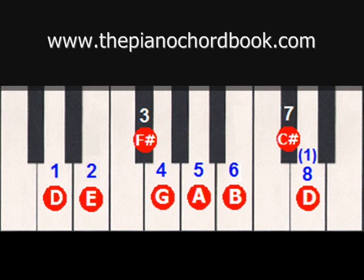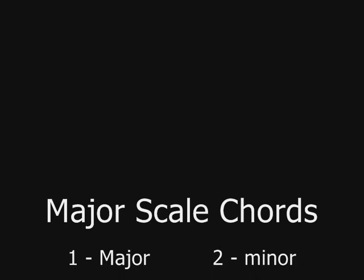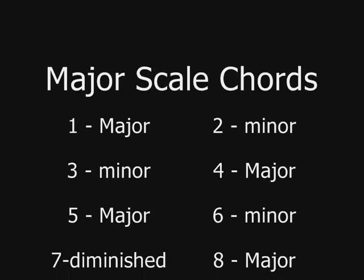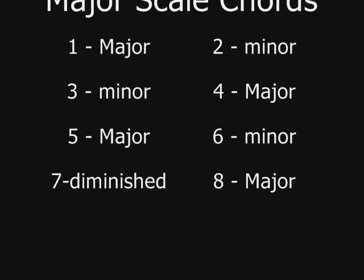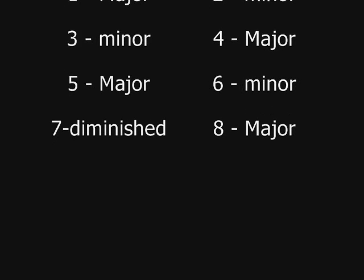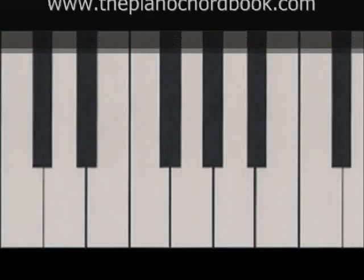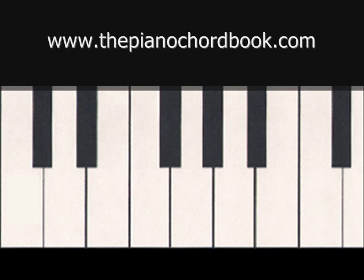Chords are created in this fashion using each successive note of the scale. As you move up the scale, you end up with three different types of chords. The first chord, on the first scale degree, is a major chord. The second chord is a minor chord. The third scale degree creates a minor chord. The fourth scale degree creates a major chord. The fifth scale degree creates a major chord. The sixth scale degree is a minor chord. And the seventh scale degree is a diminished chord. The two most common types of chords are major and minor, and they each occur three times within a scale.